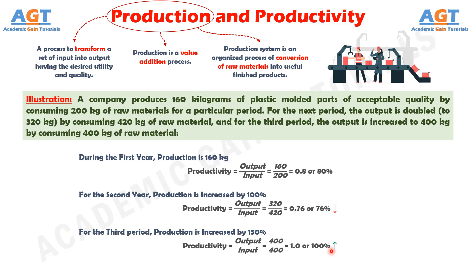To summarize, from the above illustration it is clear that for the second period, though production doubled, productivity decreased from 80% to 76%. For the third period, production increased by 150% and correspondingly, productivity increased from 80% to 100%.